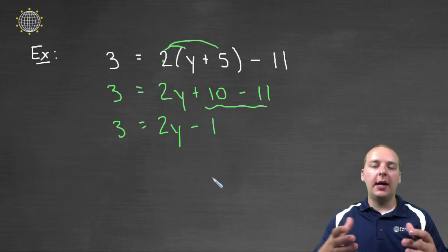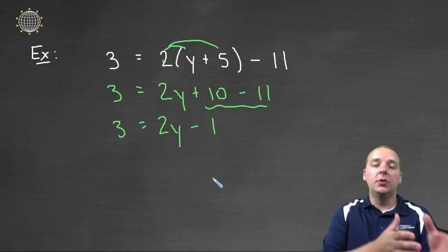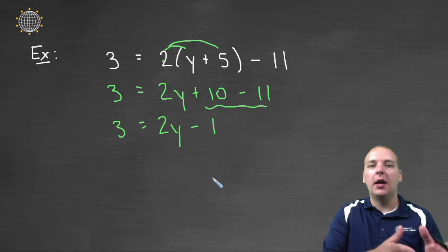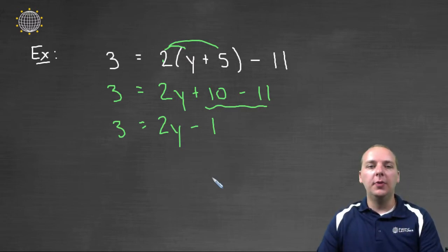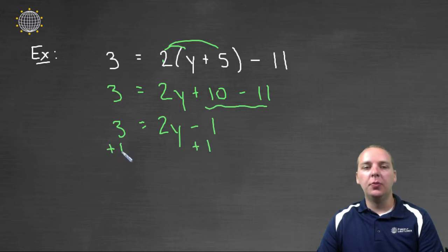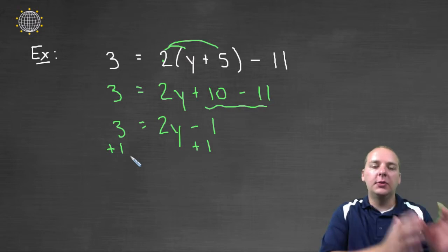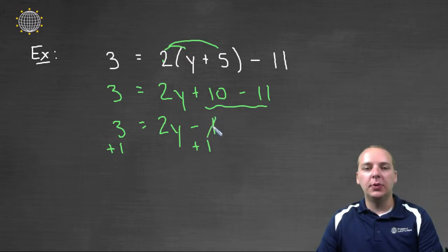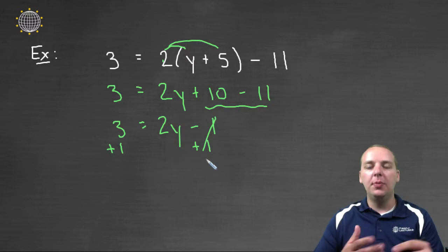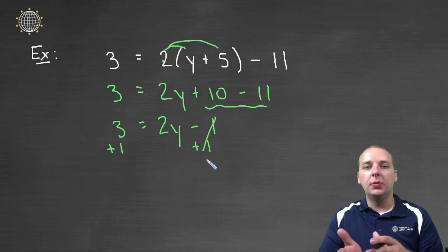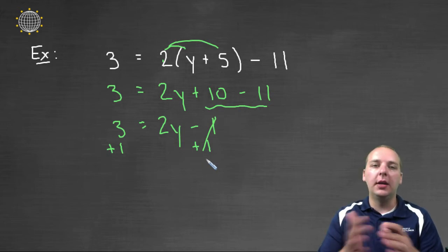Once both sides are simplified, then we have to move the variables to one side of the equation and the constants to the other. It doesn't really matter which side you move them to. Since the y's are already on the right side, I think it would be easier to add 1 to both sides, which will remove the minus 1 from the right and put a plus 1 on the left, and minus 1 plus 1 cancel on the right. Keep in mind, you always have to do the opposite operation of whatever's done.